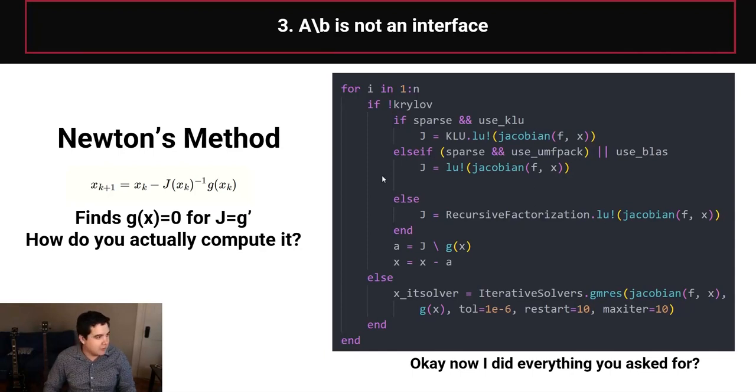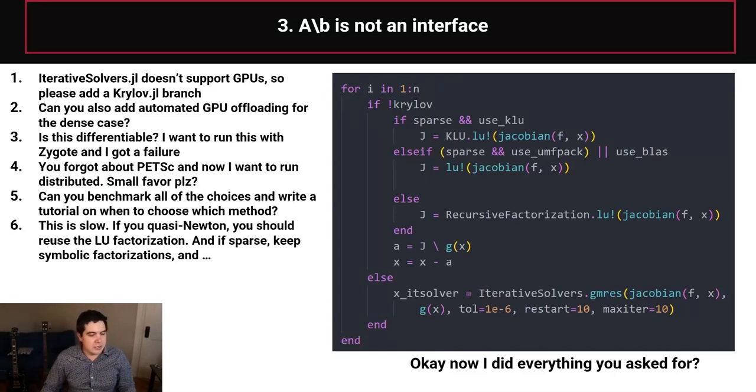and you look at all the people who've just tried your package, and they say, hey, your option for your iterative solver is IterativeSolvers.jl. And that one doesn't support GPUs. So please make a new branch in here for Krylov.jl. And oh, yeah, can you do something for GPU offloading? And oh, because you're using this RecursiveFactorization LU directly,